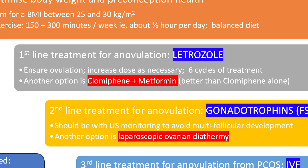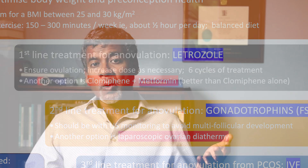Another option as first line treatment is the combination of clomiphene and metformin, which is thought to be better than clomiphene alone. People worry about fetal anomalies related to the use of letrozole or clomiphene, but when you look at the current evidence, the fetal anomaly rate associated with these two drugs is no different to what you would expect from natural conception.